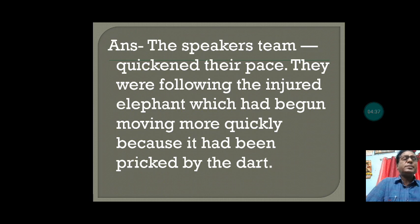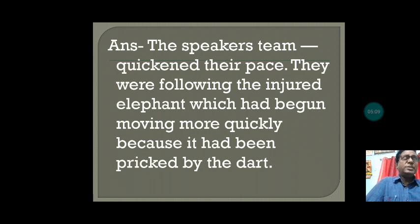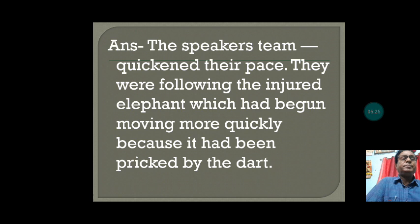The medical team also quickened their pace as they were following the injured elephant, which had begun moving more quickly because it had been pricked by the dart. A dart is a gun-like device in which a syringe is set with injection and shot from a far distance, due to the danger that the elephant may be very dangerous. After the body is injected, the animal becomes unconscious and then treatment is done.